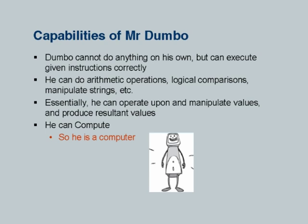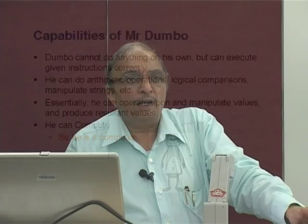Essentially Dumbo can operate upon and manipulate values and produce resultant values — that is the crux of Dumbo's capability. Finally we say he can compute, so he is a computer. In today's time, as all of you know, 'computer' is a misnomer — it is more like an information processing engine. But that is how it has historically evolved, so we give some justification.